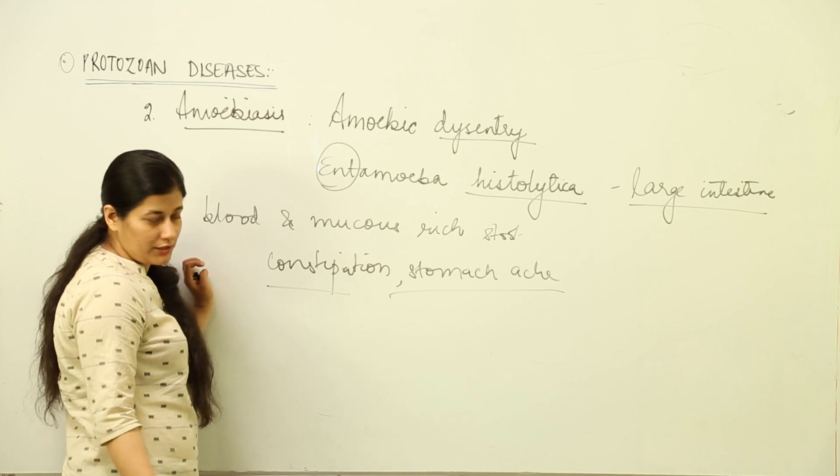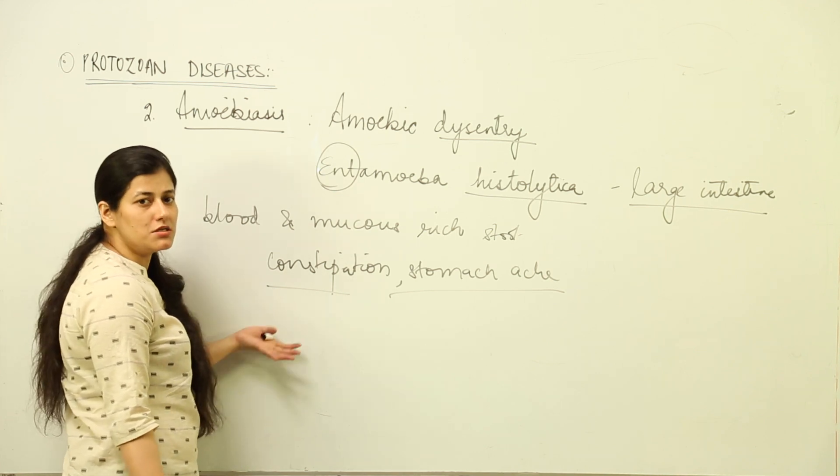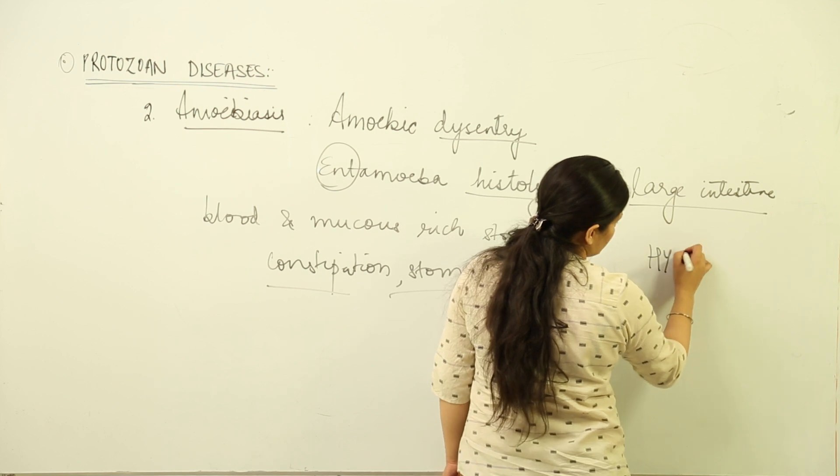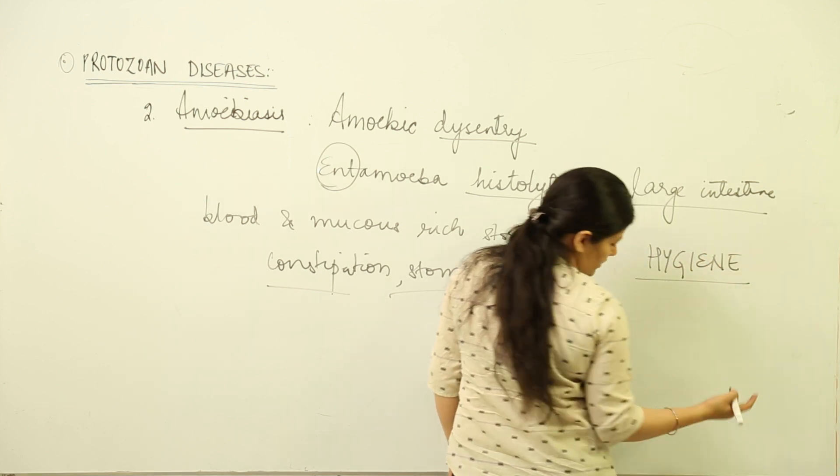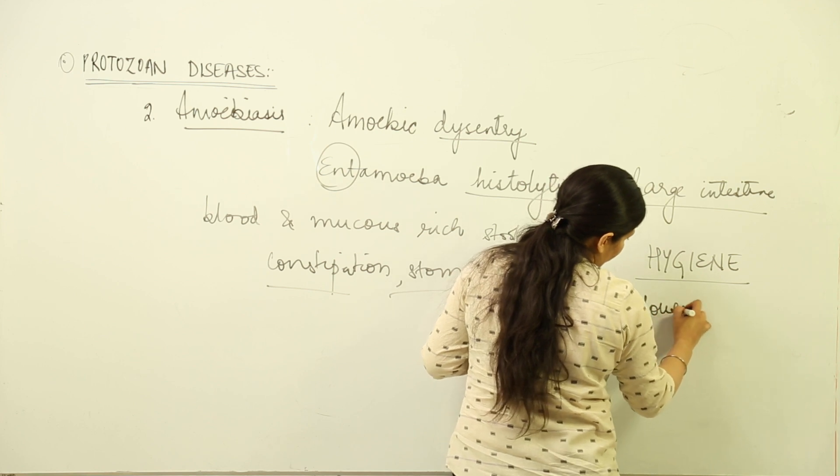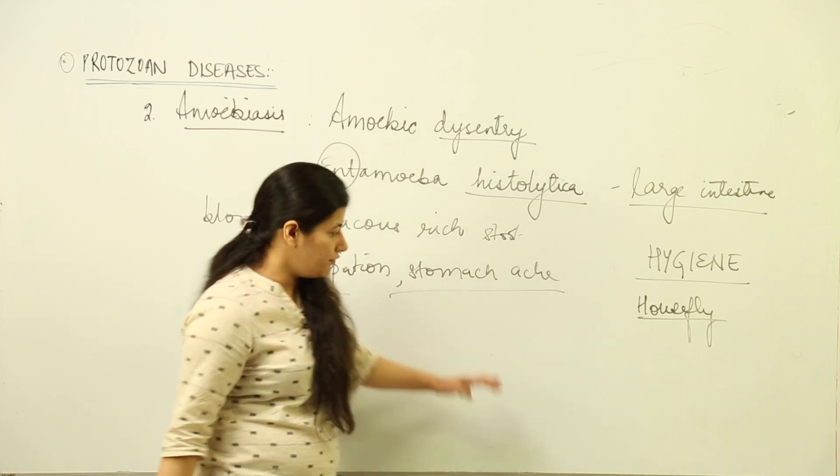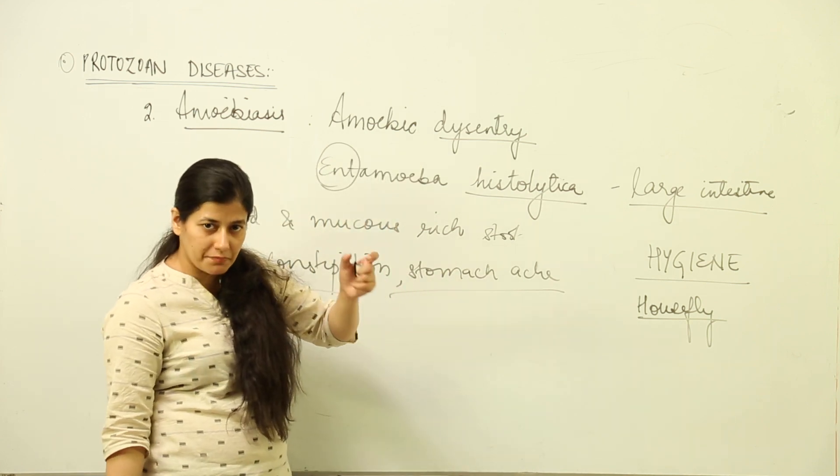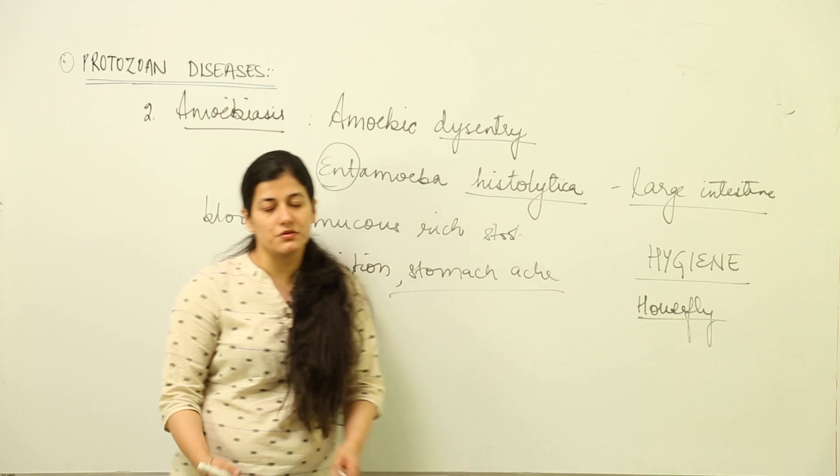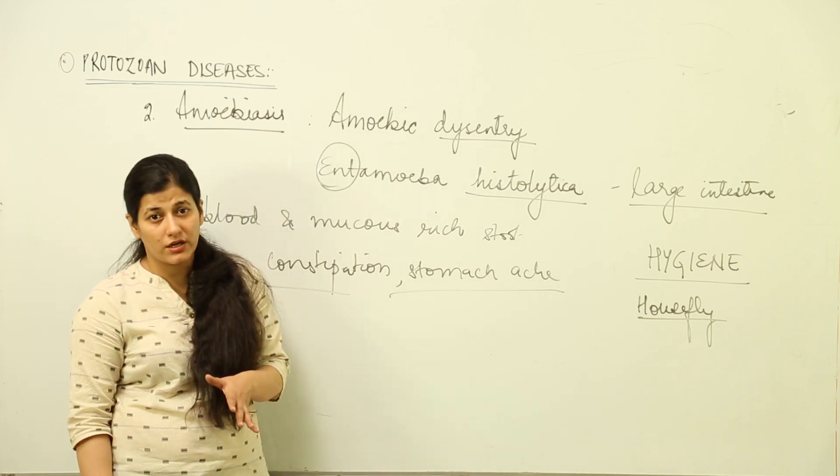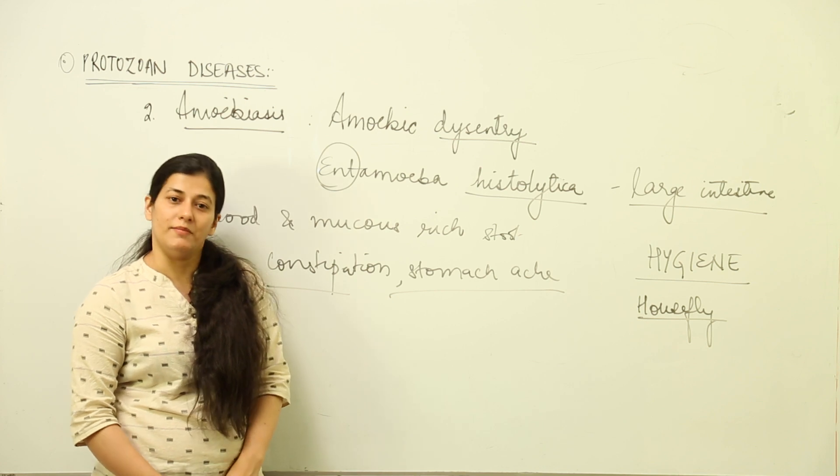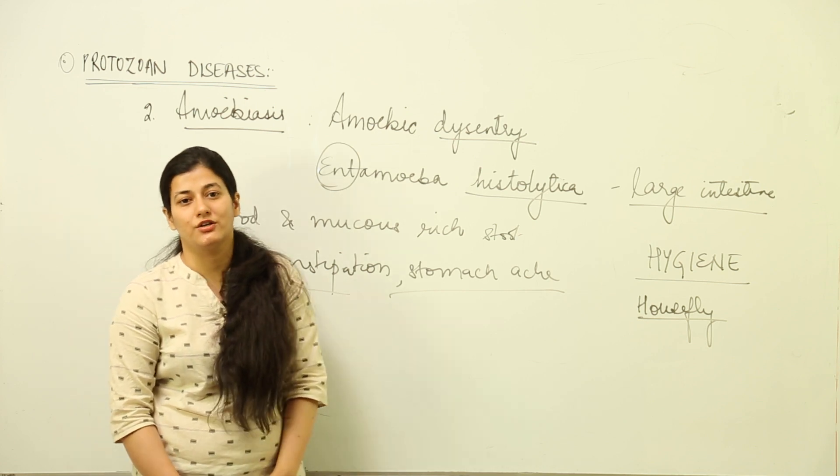How do we control it? Either we take medication once it has caused the disease, or we control it beforehand. The answer lies in maintaining hygiene. The vector that carries Entamoeba into our body is the housefly. Houseflies sit on infected person's stool, pick up the spores, transfer them to food, and we eat it and get infected. This is also a communicable disease. By controlling houseflies sitting on our eatables and maintaining hygienic conditions, we can prevent amoebiasis, which infects the large intestine.